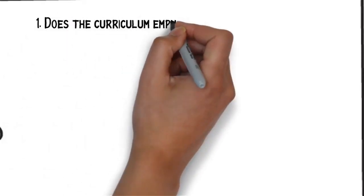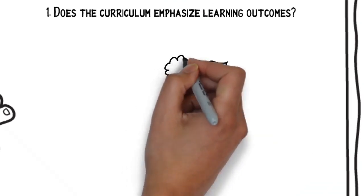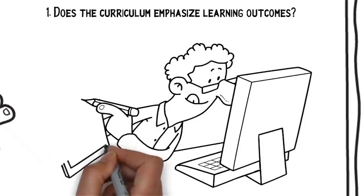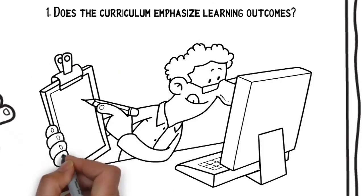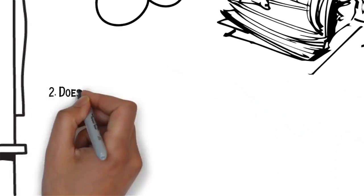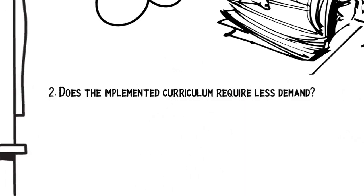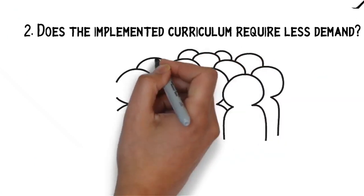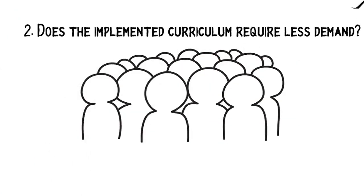Number one, does the curriculum emphasize learning outcomes? Because the learning outcomes will be the guide of the teacher to monitor the student's learning. Number two, does the implemented curriculum require less demand? When you're going to implement a curriculum, it should be more demand so that it can be useful.